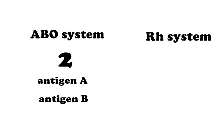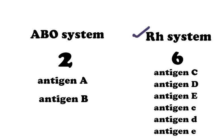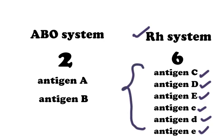On the other hand, six types of antigen are responsible for the RH system. They are expressed by capital C, D, E and small c, d, e. Of these six antigens, mainly Antigen D represents the RH system. Presence of it refers to RH positive and absence of it refers to RH negative.